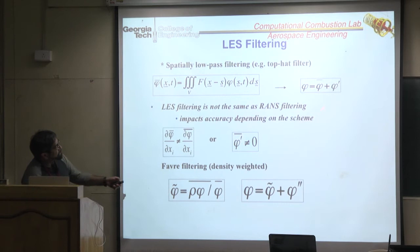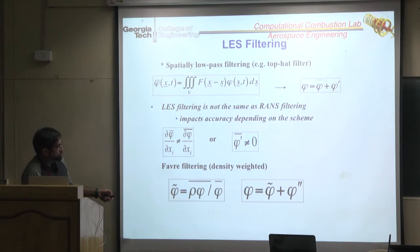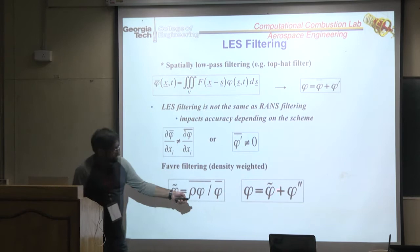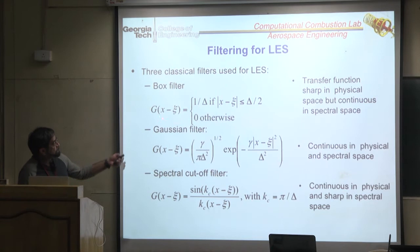Typically this averaging is what we call Reynolds averaging. Low Mach number codes will do this kind of filtering. In compressible codes, and in low Mach number combustion codes, we typically use Favre filtering, where the density-weighted filter is analogous to the Favre filter in RANS, but the implications are different.